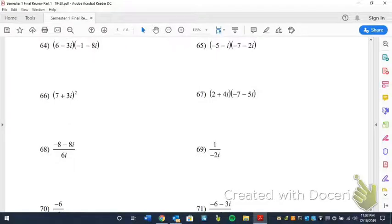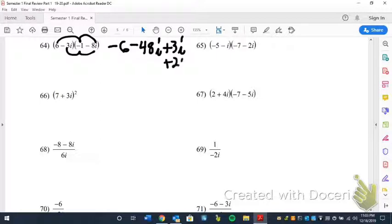Same thing with addition. Now when you multiply them, you're just going to basically FOIL. So you end up with 6 times negative 1 is negative 6, 6 times negative 8i is negative 48i, plus 3i, plus 24i squared.